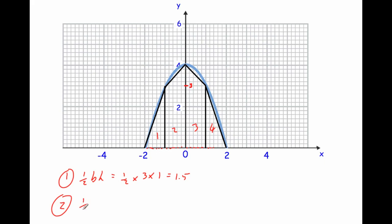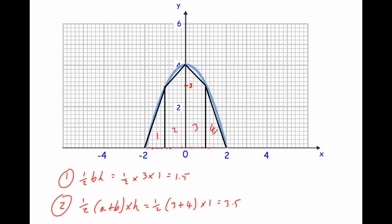For trapezium two, we use the formula: half × (a + b) × height. The two parallel sides are 3 and 4, and the distance between them is 1, so: half × (3 + 4) × 1 = half × 7 × 1 = 3.5. Interestingly, this curve has a line of symmetry — the y-axis — so the area of region two equals the area of region three, and the area of region one equals the area of region four.